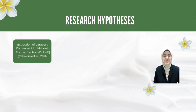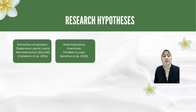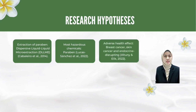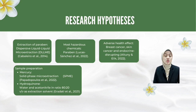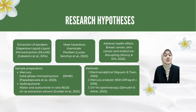There are five research hypotheses in this study. First, dispersive liquid-liquid microextraction provides the suitable extraction method for paraben. Second, most hazardous chemicals commonly found in cosmetics are paraben rather than mercury and hydroquinone. Third, breast cancer, skin cancer and hormonal disruption by hydroquinone are the major adverse health effects contributed by cosmetics. Fourth, solid-phase microextraction is the suitable sample preparation for mercury determination, meanwhile water and acetonitrile in the ratio of 80:20 volume per volume were used as the extraction solvents for hydroquinone determination. And fifth, the most efficient methods to analyse paraben, mercury and hydroquinone are electroanalytical, mercury analyser and UV-Vis spectroscopy respectively.